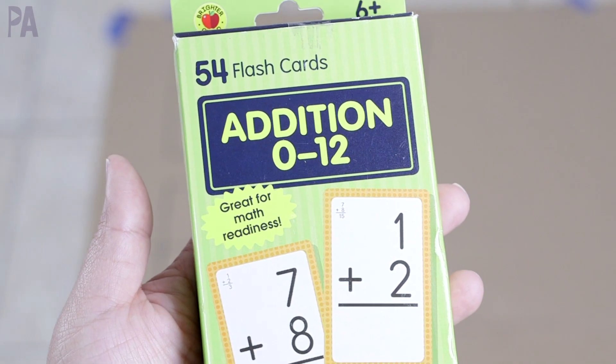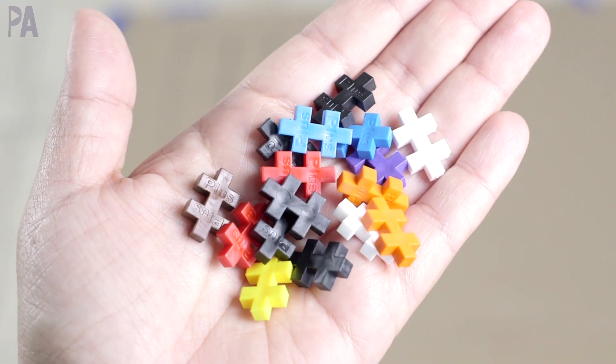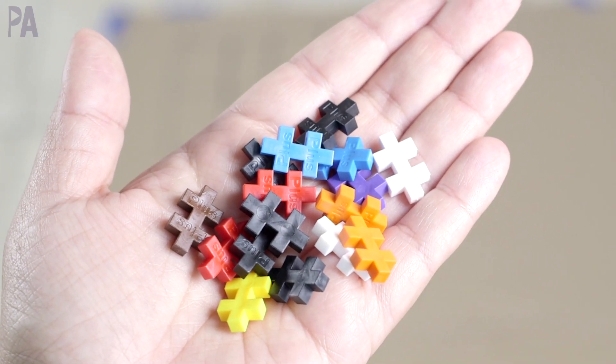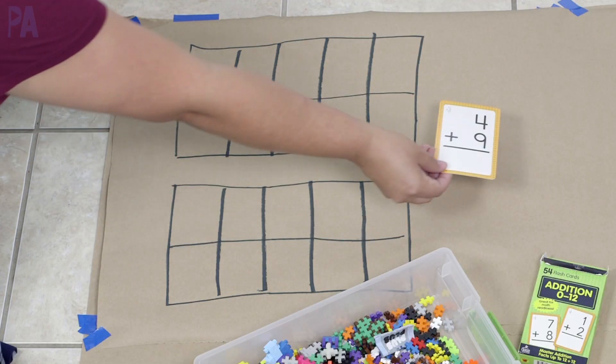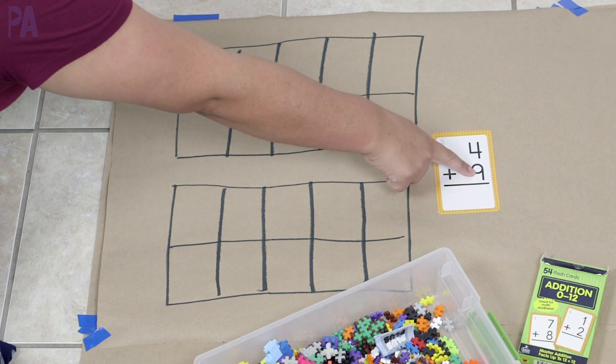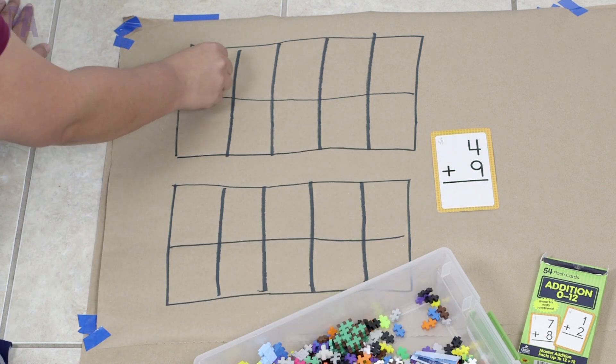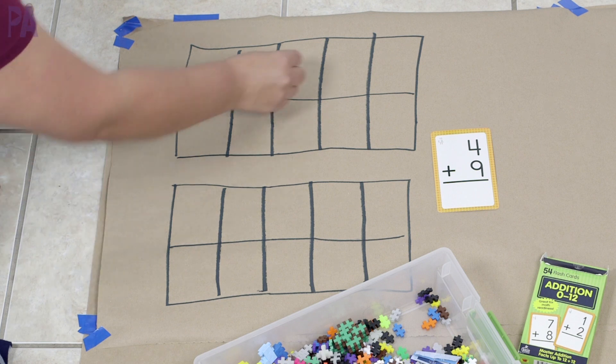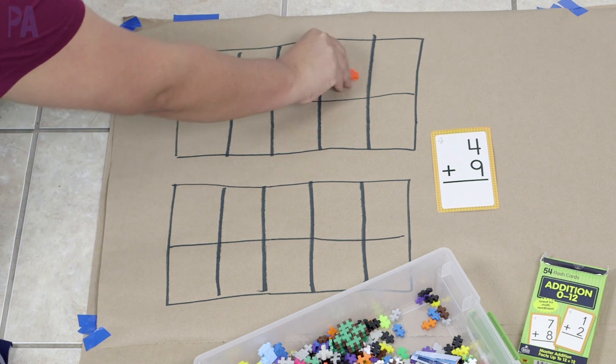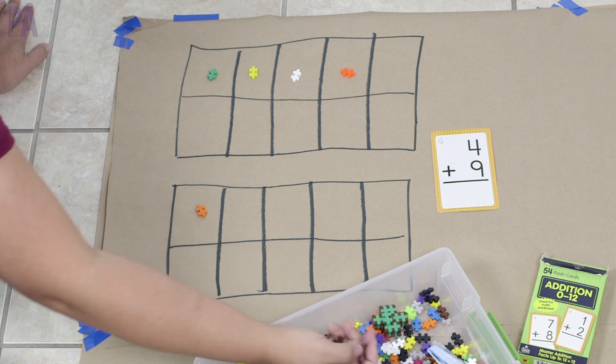I'm also using these flashcards. They're addition flashcards. They come from the dollar store, which is a great place to get them. And I'm using these plus plus counters as manipulatives, but you could use Legos. You could use counting chips. You could use counting bears, whatever you have at home. This activity is very simple. I'm just going to do the four on the top for the top of my flashcard, plus the nine in the bottom frame. Then I'm going to add them up all together to get my answer.